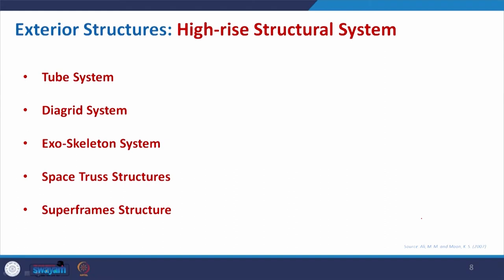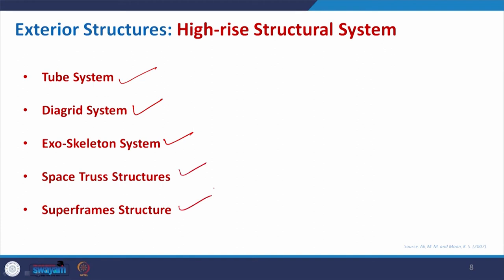Coming to exterior structures, we can see five main types in this category: tube system, diagrid system, exoskeleton system, space structure system, and super frame structural system. Now we move to the tube system.